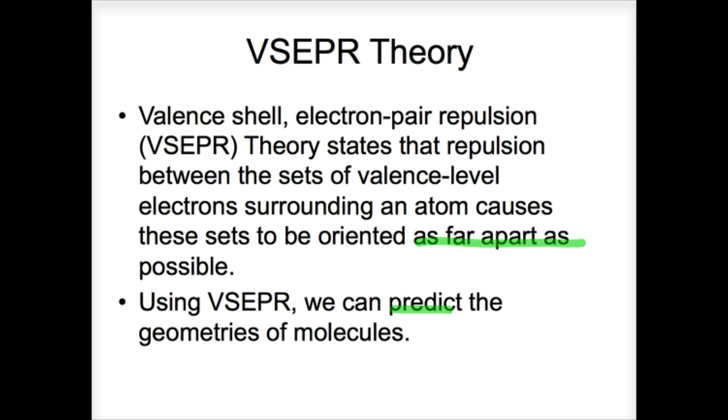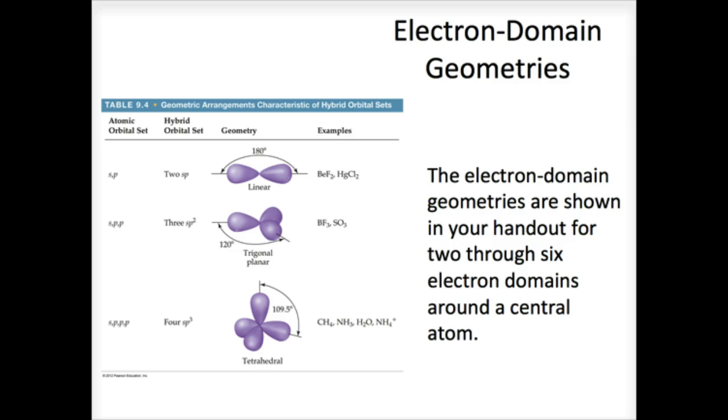Now, the important thing here, what we're actually dealing with is what we would term electron domain geometries. In other words, the electron domain is where those electrons will be found in a particular compound. So, for example, if we look at SO3 here, SO3 is actually what's known as trigonal planar. In other words, I have an O here, I have an O here, I have an O here, I have S in the middle. And because there's no extra electrons on that central atom, they get as far away as possible, which is about 120 degrees.